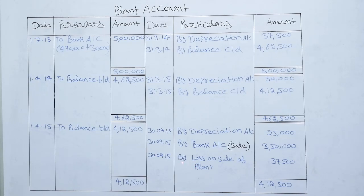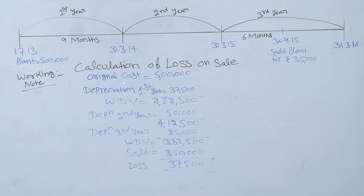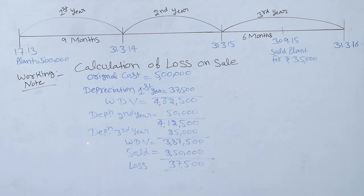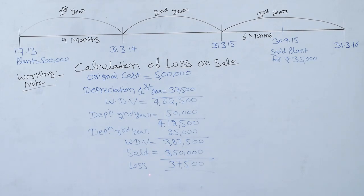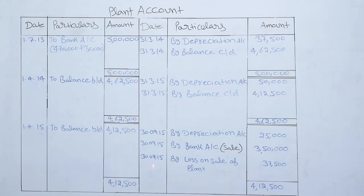ABC Limited sold the machine for Rs 3,50,000. We will understand this loss from the working note — calculation of loss on sale. Original cost of plant: Rs 5,00,000. Depreciation for first year (9 months): Rs 37,500. Written down value: Rs 4,62,500. Second year depreciation: Rs 50,000; written down value: Rs 4,12,500. Third year depreciation for 6 months: Rs 25,000; written down value: Rs 3,87,500. Company sold machine for Rs 3,50,000, so there is a loss of Rs 37,500. On 30th September 2015, by loss on sale of plant: Rs 37,500.